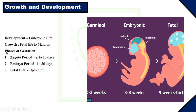Now, what is embryonic life and fetal life? The length of gestation of an animal is divided into three phases: number one, zygote phase; number two, embryonic phase; and number three, fetal phase. The zygote phase is about the first two weeks of gestation. In this phase, the zygote is formed by the fusion of sperm and ova, which transforms into morula and further develops into blastula and blastocyst.